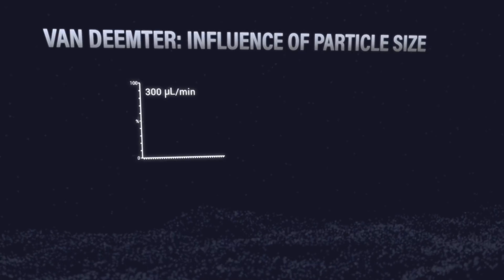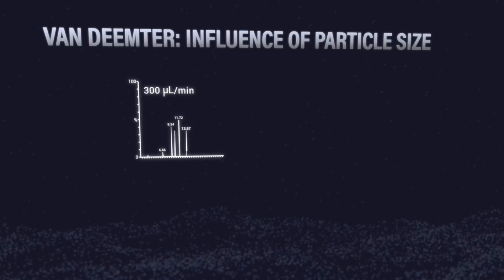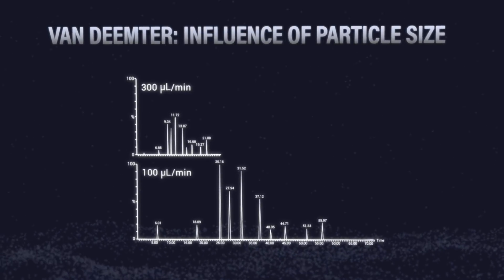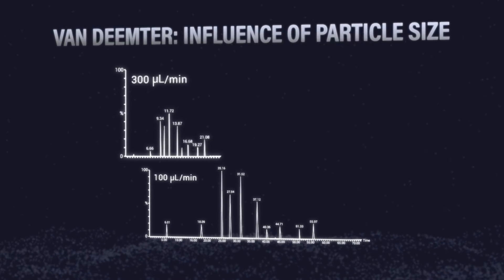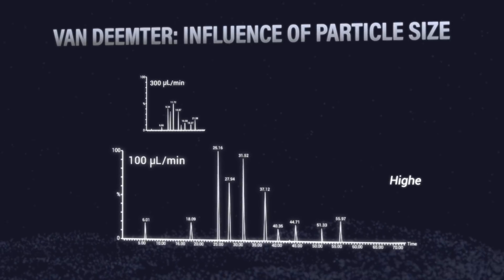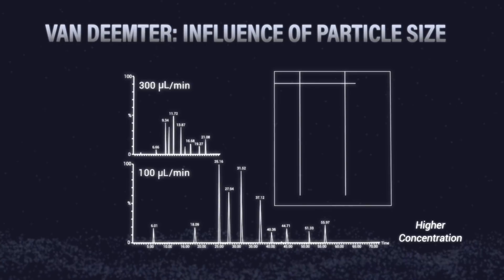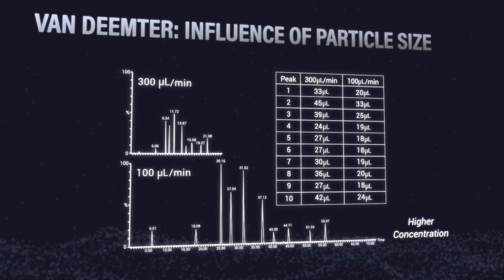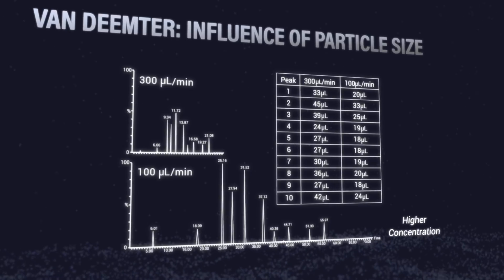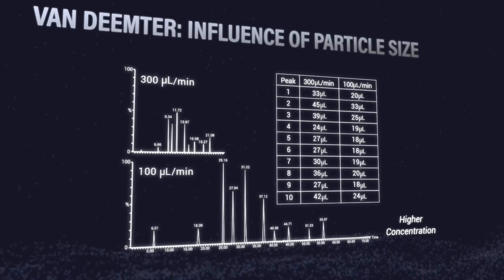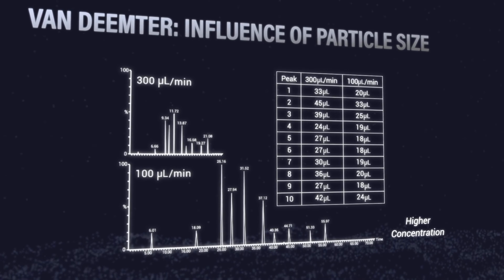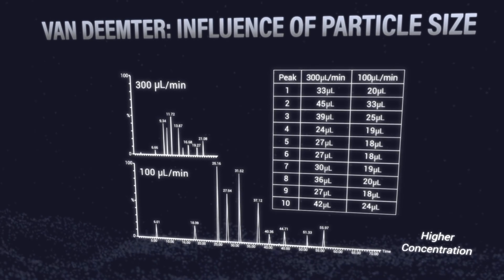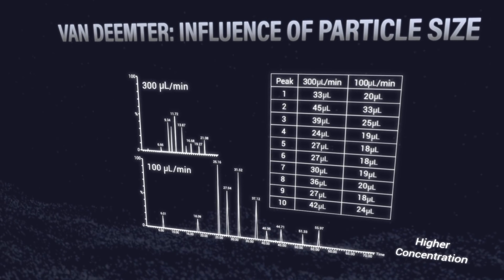What does that van Deemter curve look like for a real sample? Let's hone in on flow rates specifically. As we showed in the van Deemter curves, it's very different with a peptide. If we look at a peptide standard run at 300 microliters a minute versus 100 microliters a minute, you can see the difference in peak volume. The peak volumes of each of those peptides are smaller at the slower flow rate, which speaks to the fact that peptides diffuse more slowly through the column. We really can't treat them like small molecules — we have to take a slower flow rate into consideration.